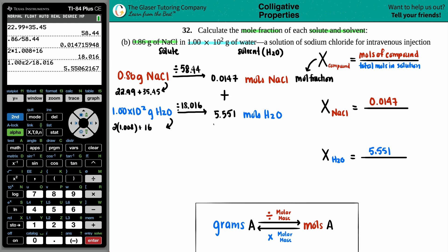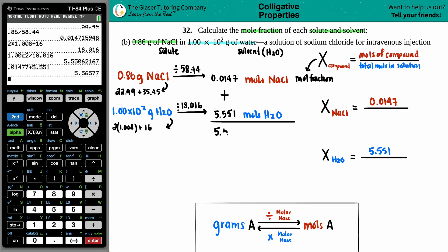0.0147 plus 5.551 is a total of 5.5657 total moles. And now I know that the denominator for both of them is going to be 5.5657. Maybe we might have to adjust this a little bit, because I think I added one extra 7. 0.0147 plus, okay, 5657. So we're just going to chop off that last 7.